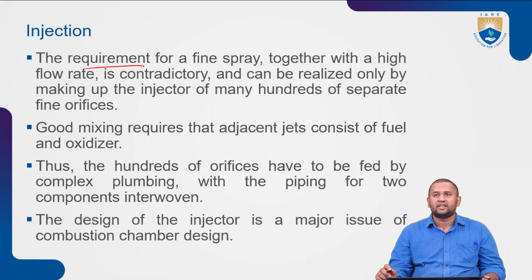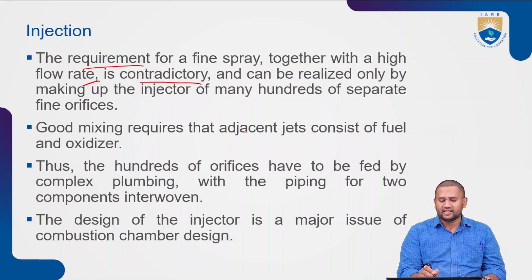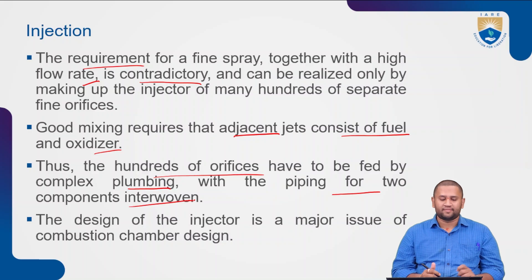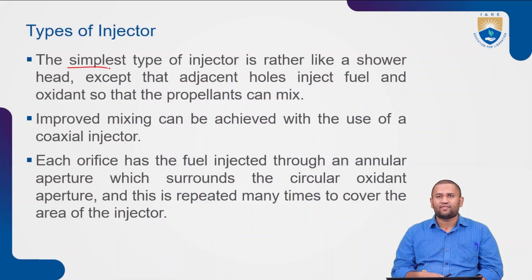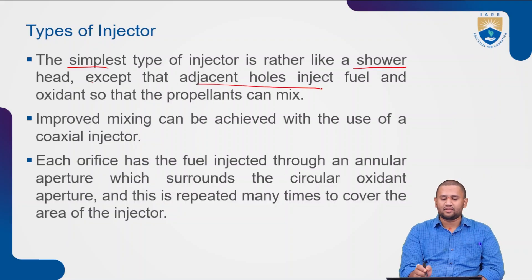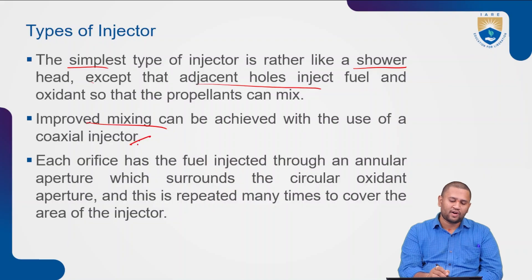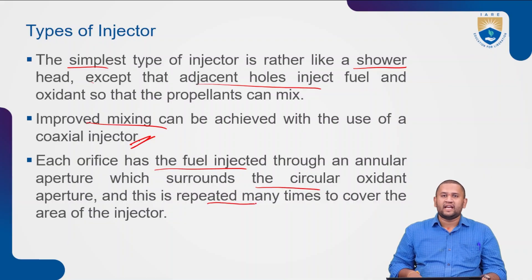The requirement for a fine spray together with a high flow rate is contradictory and can only be achieved by making the injector from many hundreds of separate fine orifices. Good mixing requires that adjacent jets consist of fuel and oxidizer. These hundreds of orifices must be fed by complex plumbing with piping for two interwoven components. The design of the injector is therefore a major issue in combustion chamber design. The simplest type is similar to a shower head, where adjacent holes inject fuel and oxidant so that the propellants can mix. Improved mixing can be achieved with a coaxial injector.